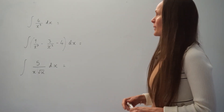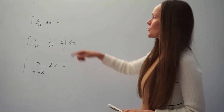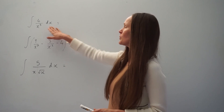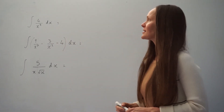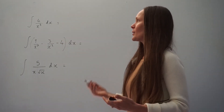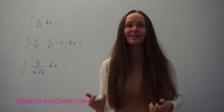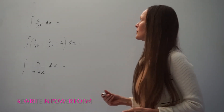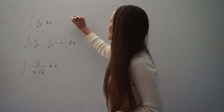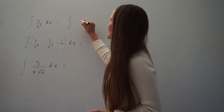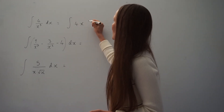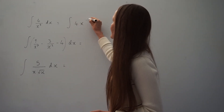In this first example, we have to find the integral of 4 divided by x cubed with respect to x. The first thing you should do is rewrite the question in its power form — take it out of the fraction. So it would become the integral of 4x raised to the power of negative 3.